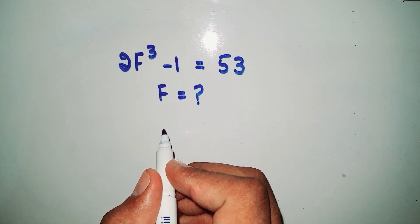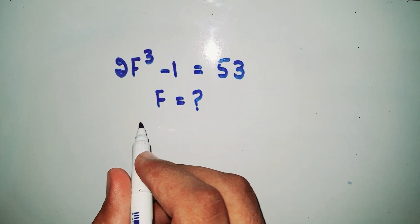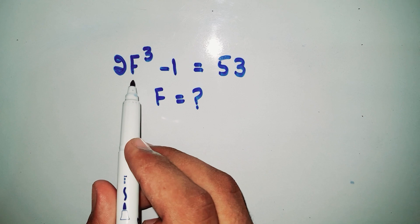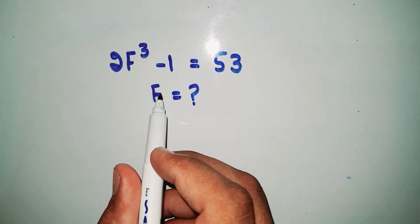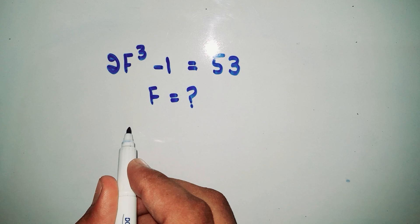Welcome back to another video. In this video we are going to solve this beautiful problem: 2F³ - 1 = 53. We have to find the value of F. So first of all here we write 2F³ - 1 = 53.